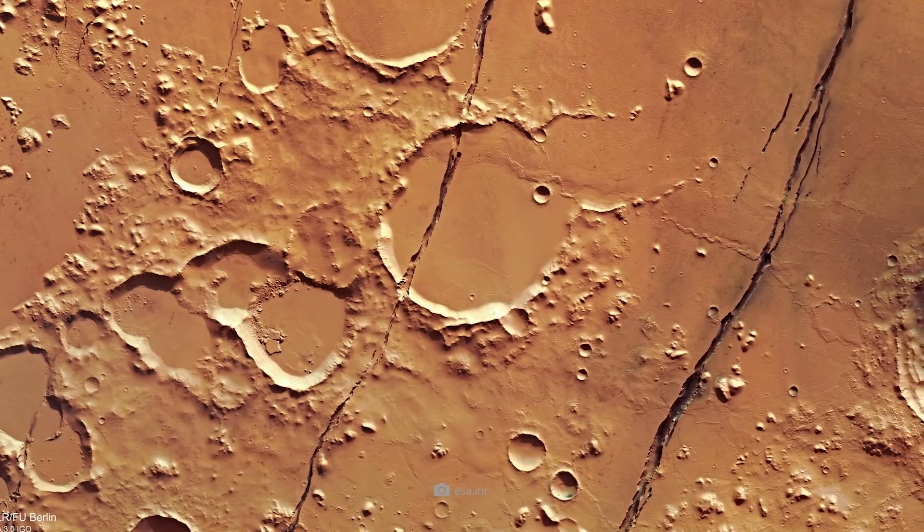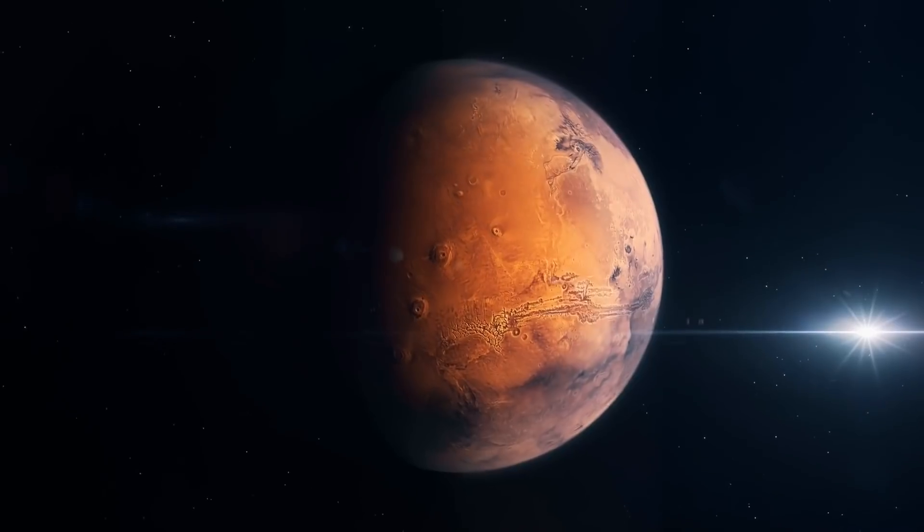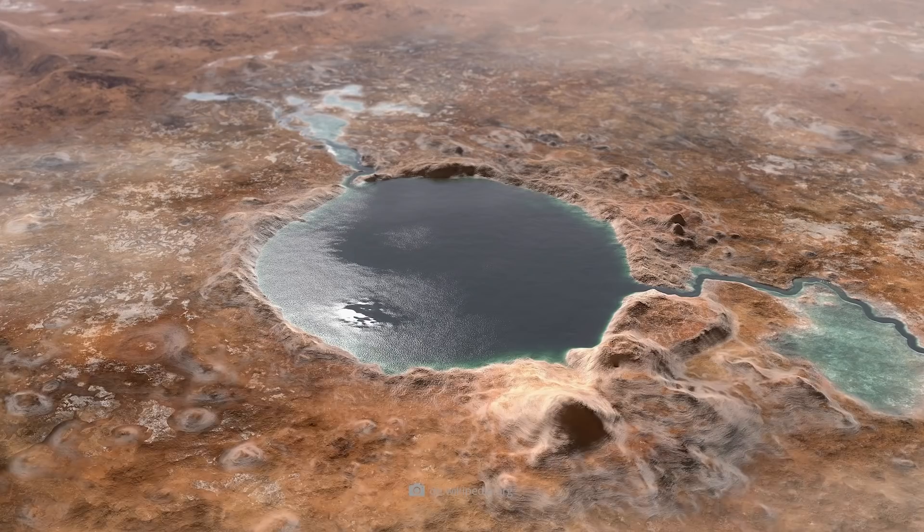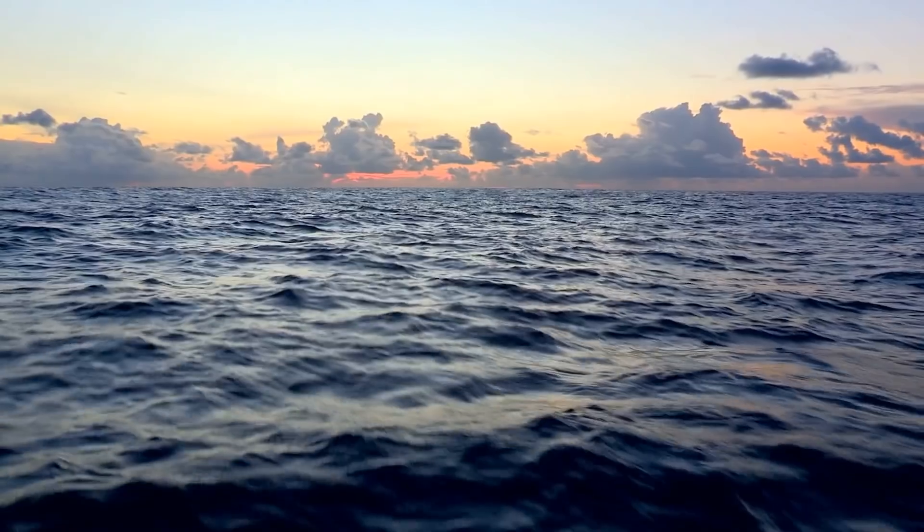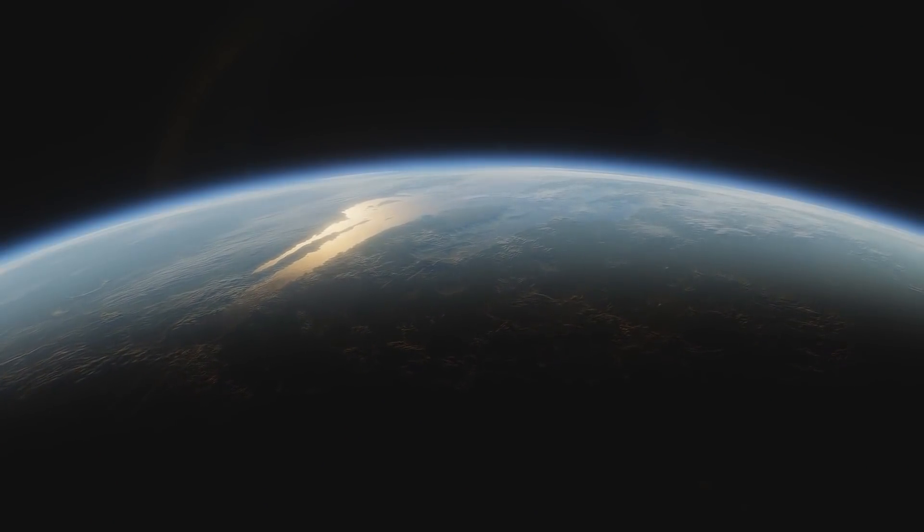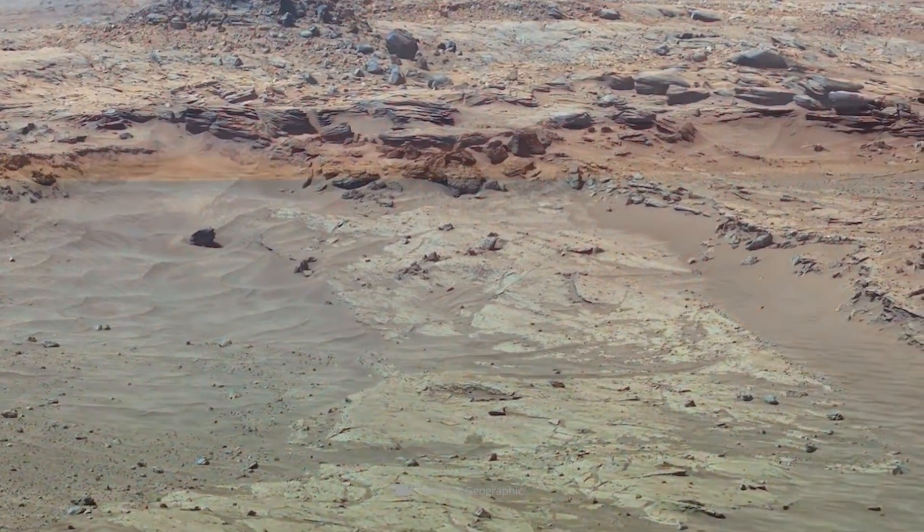One thing is certain: Mars did not always have the dry and dusty appearance that it presents to us today. If we turn back the wheel of time by about 3.8 billion years, we would find large quantities of flowing water on the surface of Mars, which would come together to form gigantic seas. Experts estimate that up to 75% of the planet's surface could have been covered with liquid water at that time.